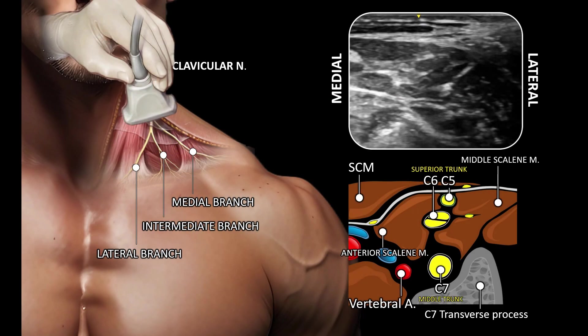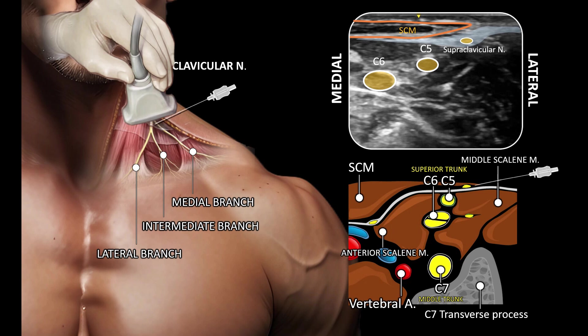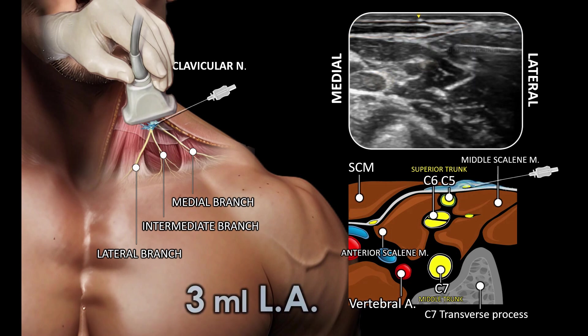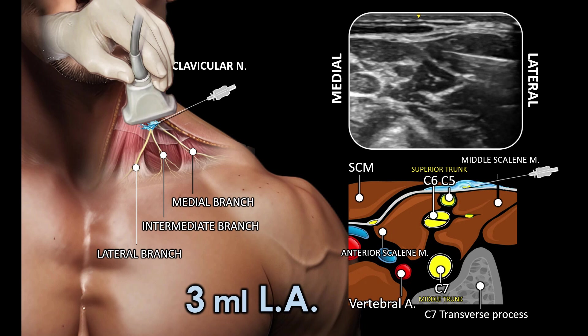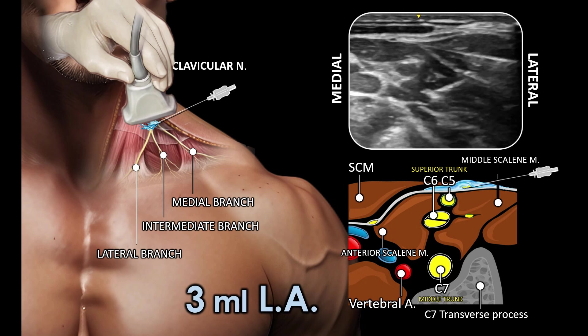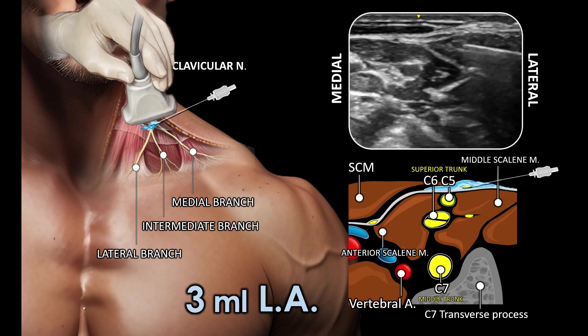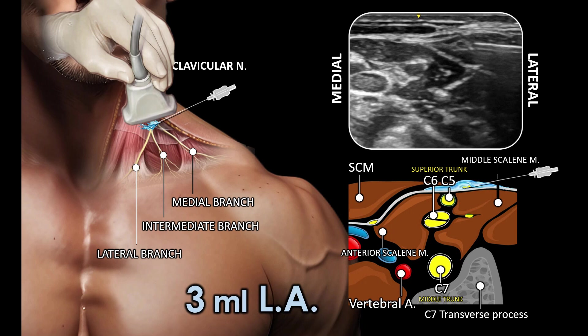A small hypoechoic structure can be identified originating from the root of C4, lying superficial to the deep investing layer of cervical fascia at the level of the C4 and C5 nerve roots. Scanning caudally, this structure passes superficially over the belly of scalenus medius, deep to the sternocleidomastoid muscle. We deposit two to three ml of local anesthetic around the branches.